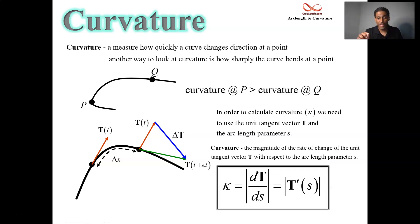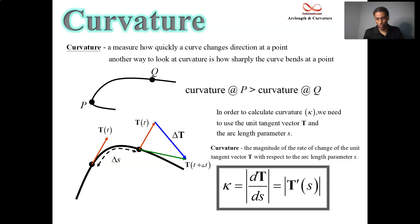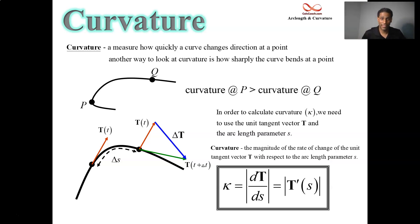So we have to take the unit tangent vector, that's capital T, with respect to S, and take its derivative, and then take its magnitude. The magnitude of the rate of change of the unit tangent vector with respect to the arc length parameter is what curvature is. Let's see it in action, from definition.